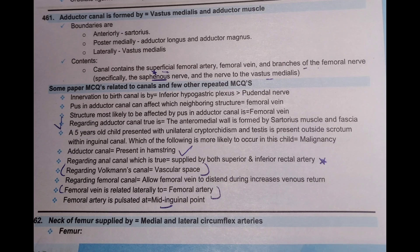Regarding innervation of the birth canal region, it is supplied by the inferior hypogastric plexus more than the pudendal nerve. If you see both of them as options, do not overlook the inferior hypogastric plexus.